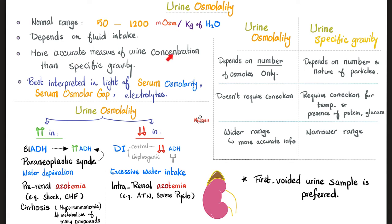Urine osmolarity is more accurate than urine-specific gravity in measuring urine concentration. Three reasons: First, osmolarity cares only about the number of osmols — not the weight, mass, or nature of the particle. Second, urine osmolarity does not require correction, but urine-specific gravity needs to be corrected for temperature and for the presence of protein or glucose. Third, urine osmolarity has a very wide range — 50 is not the same as 550 or 1,150 — giving you more information, whereas urine-specific gravity is a narrower range.